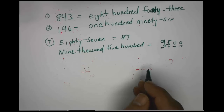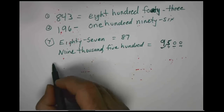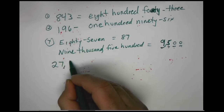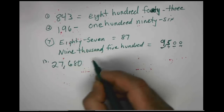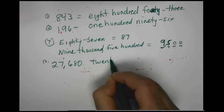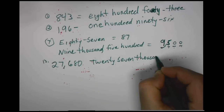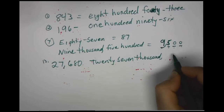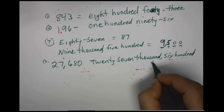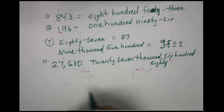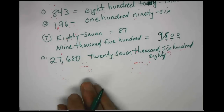As we continue down the assignments, the numbers are just getting bigger. So if we have 27,680 for problem number 13, we would write our words 'twenty-seven thousand six hundred eighty,' just like you would on a check. Simply look at the numbers, find the value, write the words.